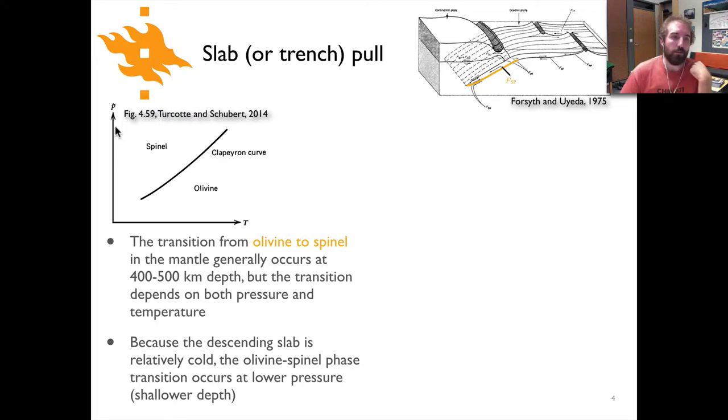As you can see here, we have a plot of pressure and temperature. The line here is the phase transition, this is the Clapeyron curve. Depending on the relative temperatures and pressures of the material, you'll have this phase transition take place at different pressures or temperatures.